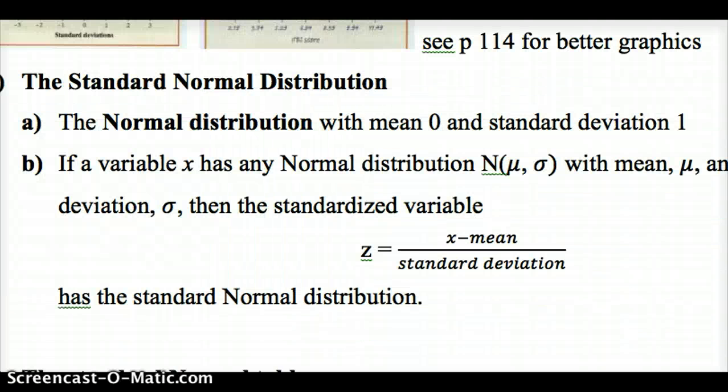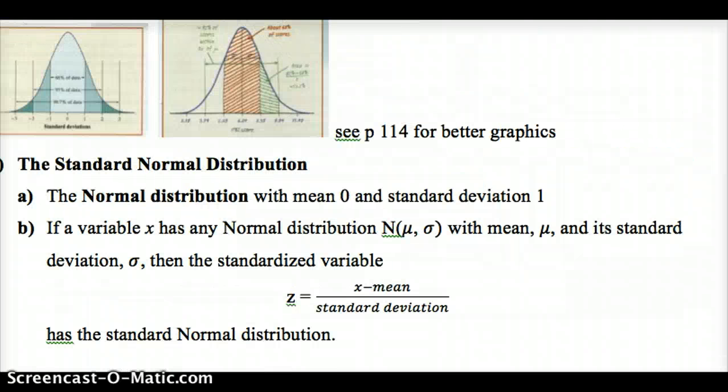The normal distribution with mean zero and standard deviation one is a standard normal distribution. We call it standard because it's been standardized, meaning we've divided by the standard deviation. It tells us how many standard deviations we are away from the mean, hence the name standard normal distribution. Our z-scores are given by the data point minus the mean divided by the standard deviation.